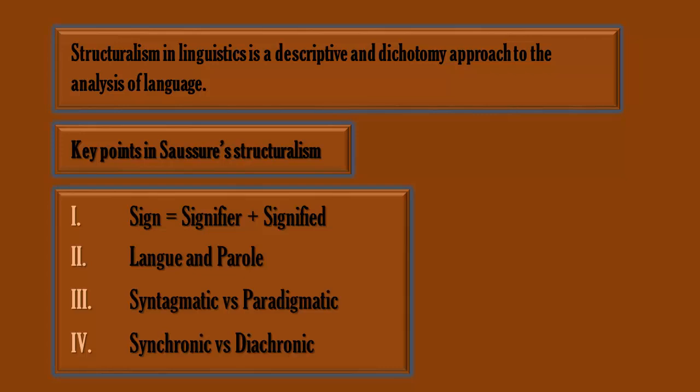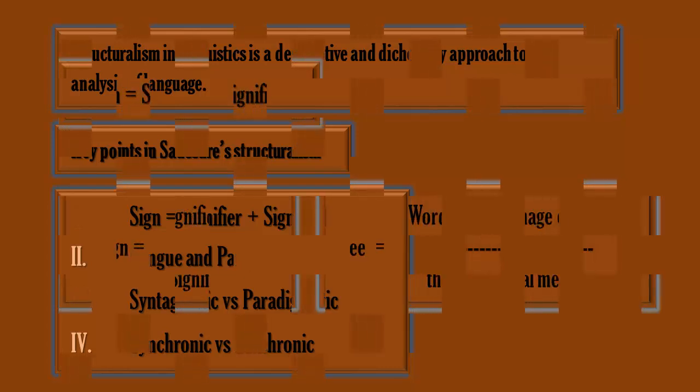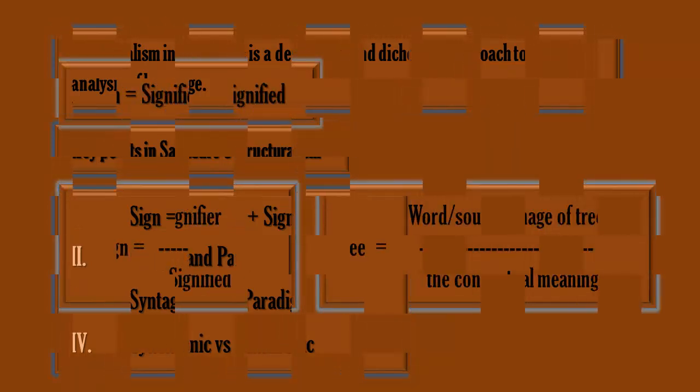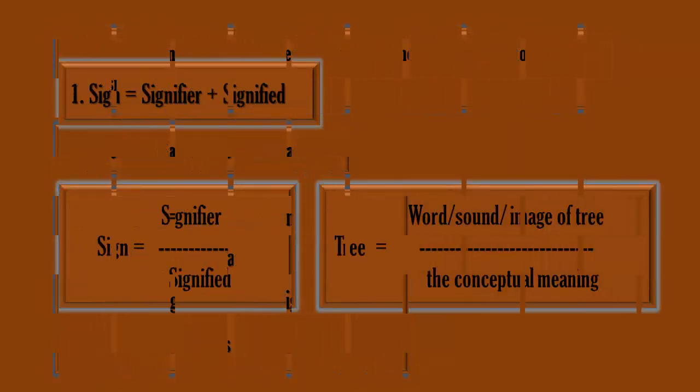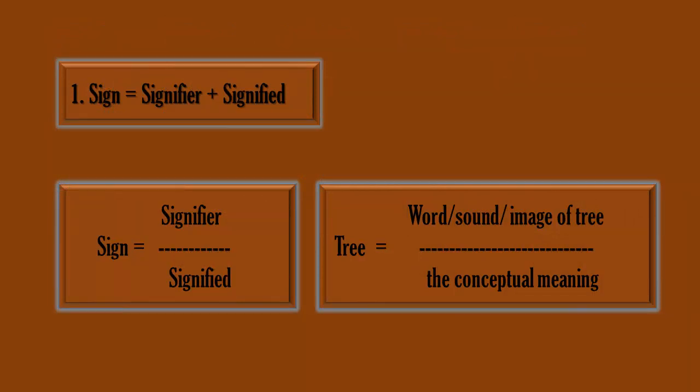The key points also include syntagmatic versus paradigmatic relationship, and synchronic versus diachronic study of language. A sign is the combination of signifier and signified — it depends for its meaning on the whole structure.